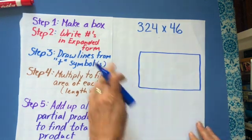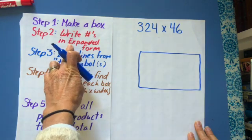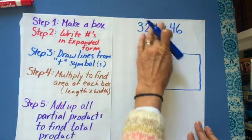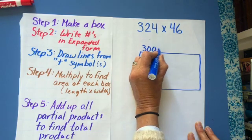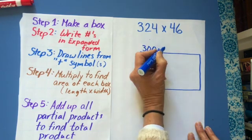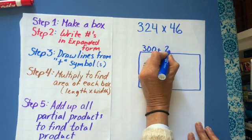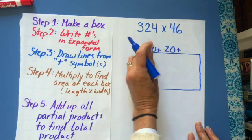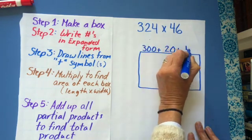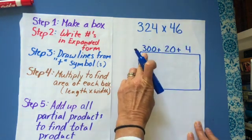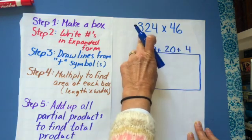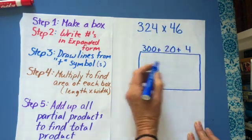The second step is to write the numbers in expanded form. So I'm going to write this number in expanded form. So that three is really 300. The value of that two is really 20. And the value of that four is really four ones. So 324 is 300 plus 20 plus 4 written in expanded form.